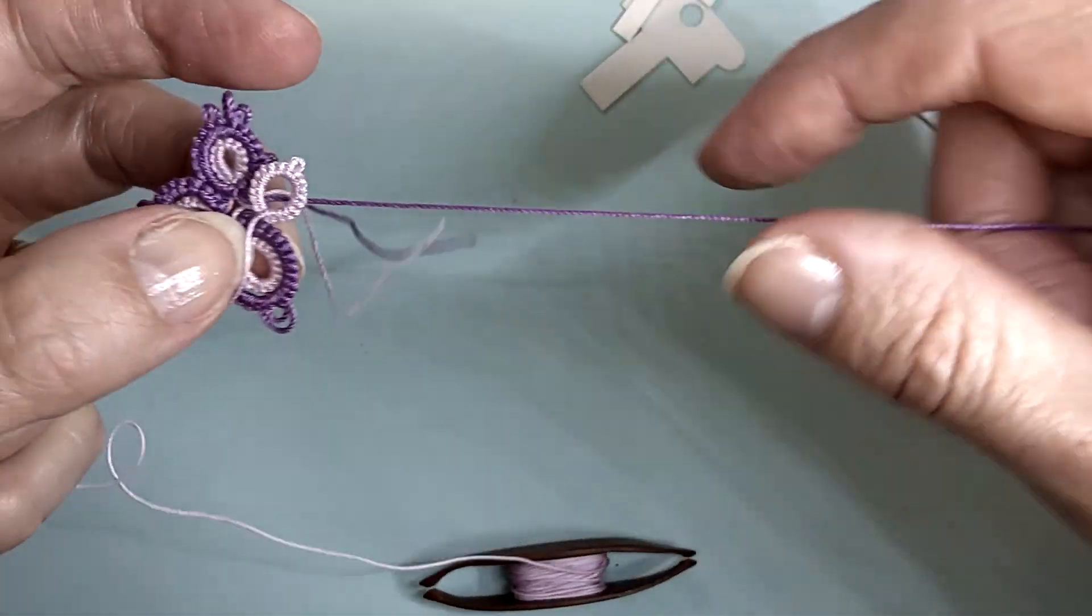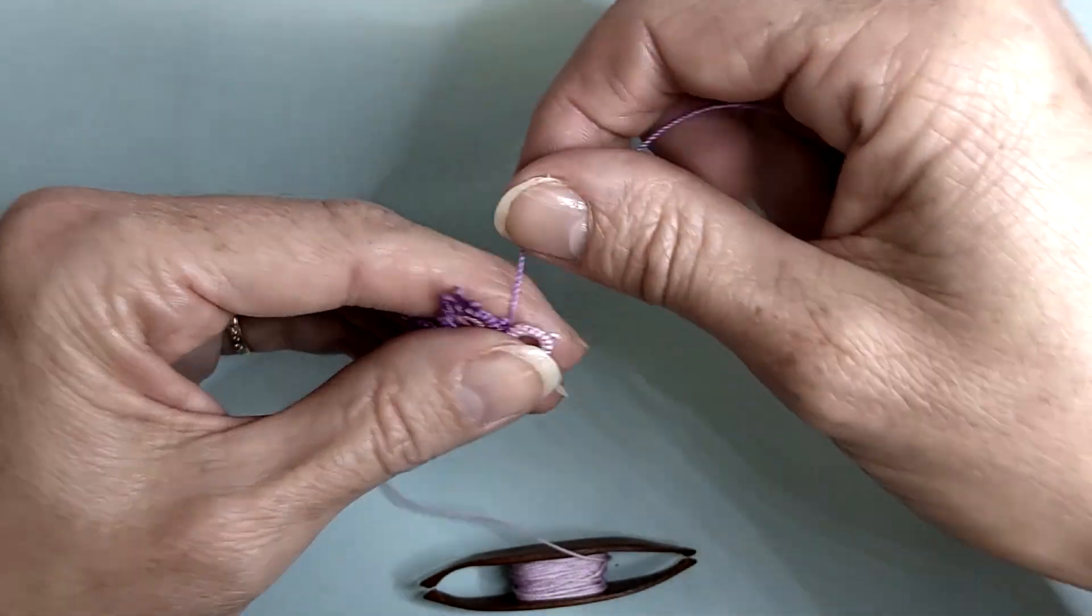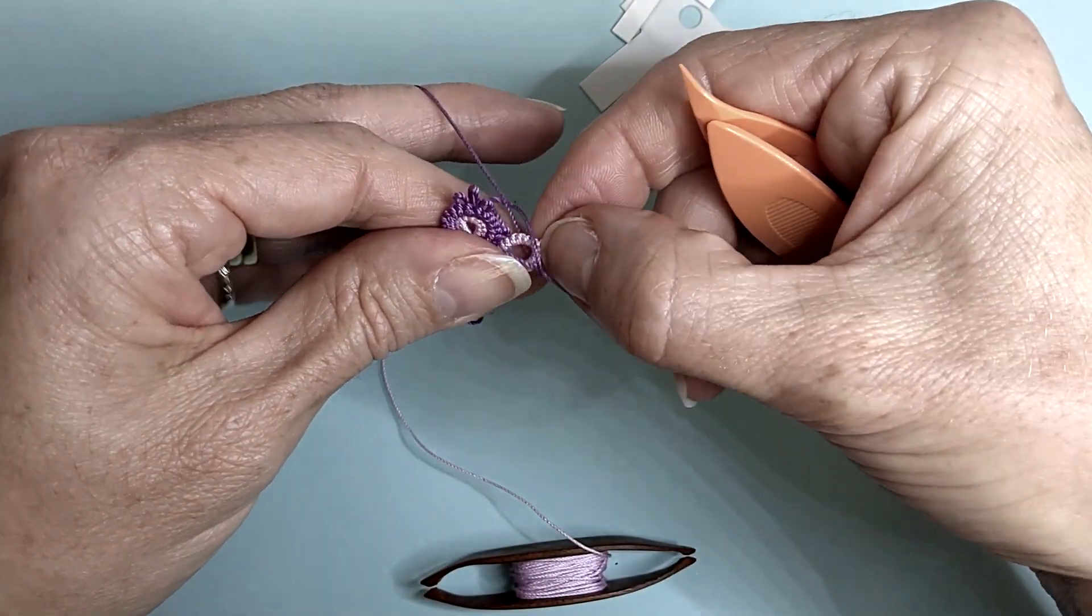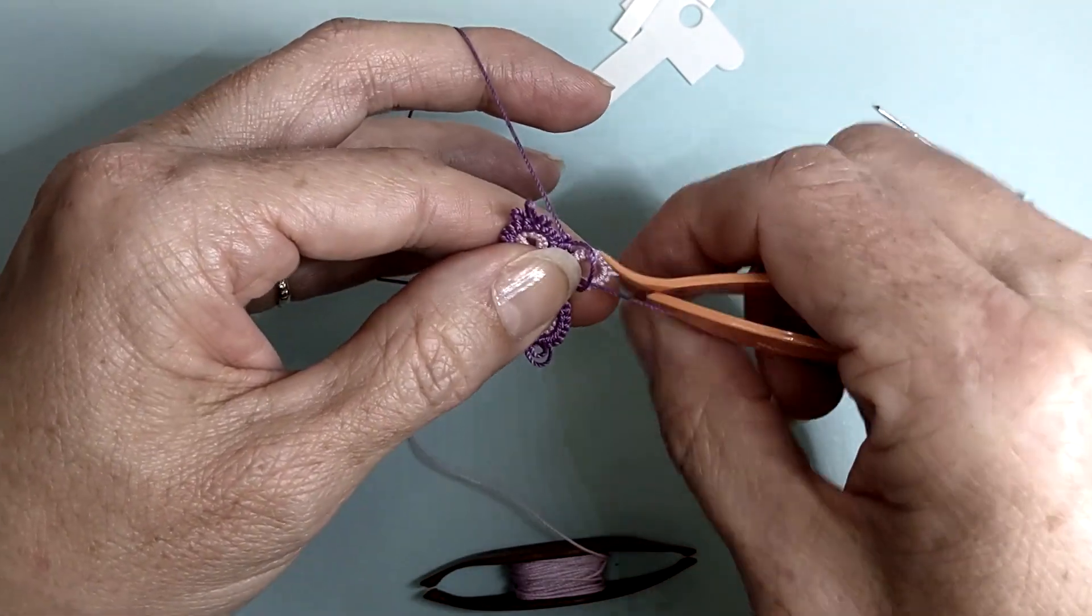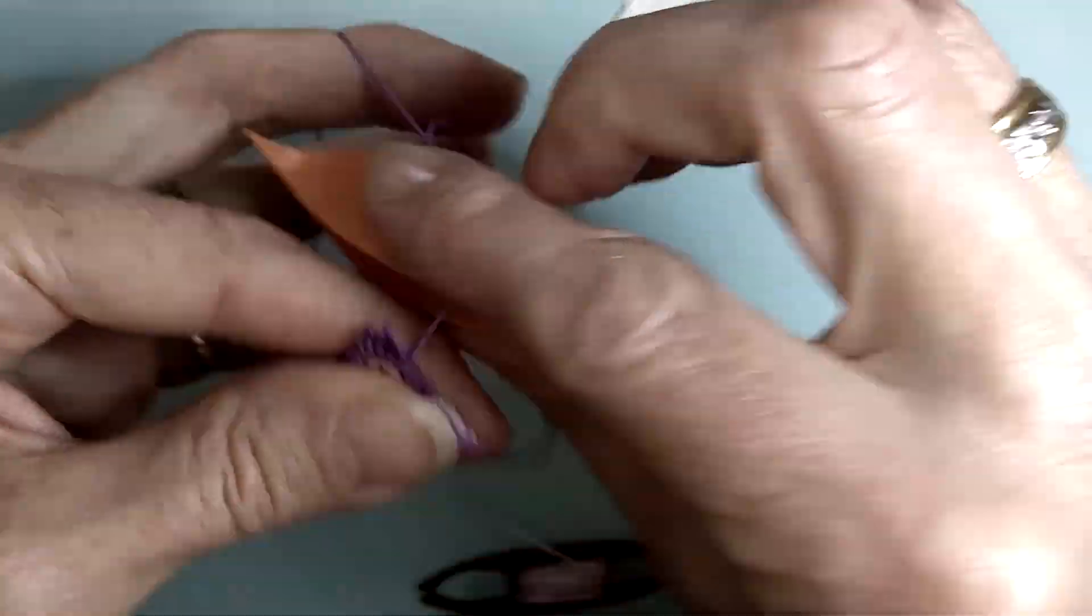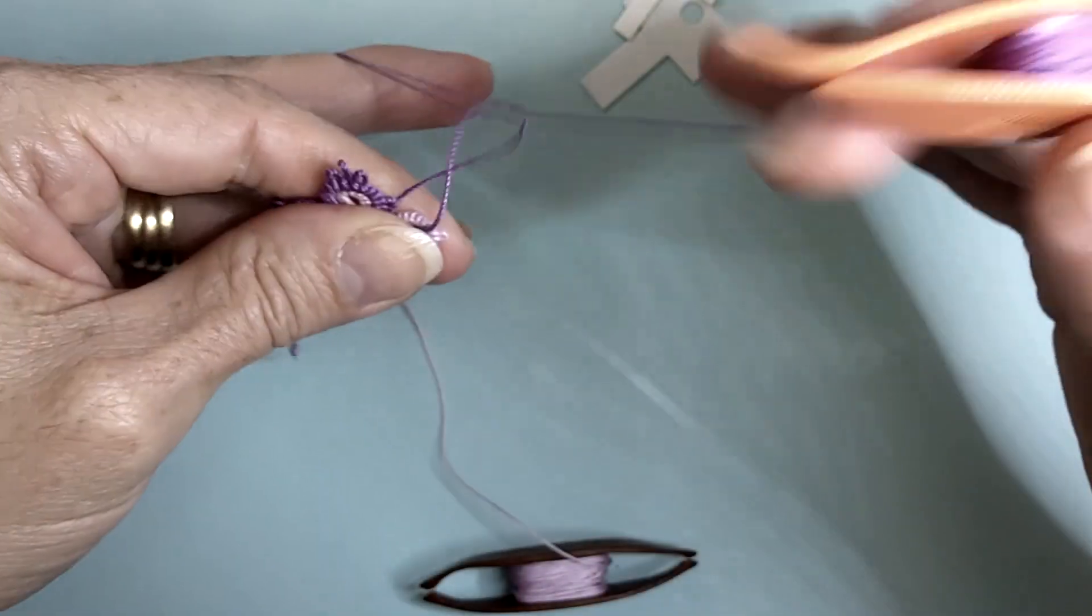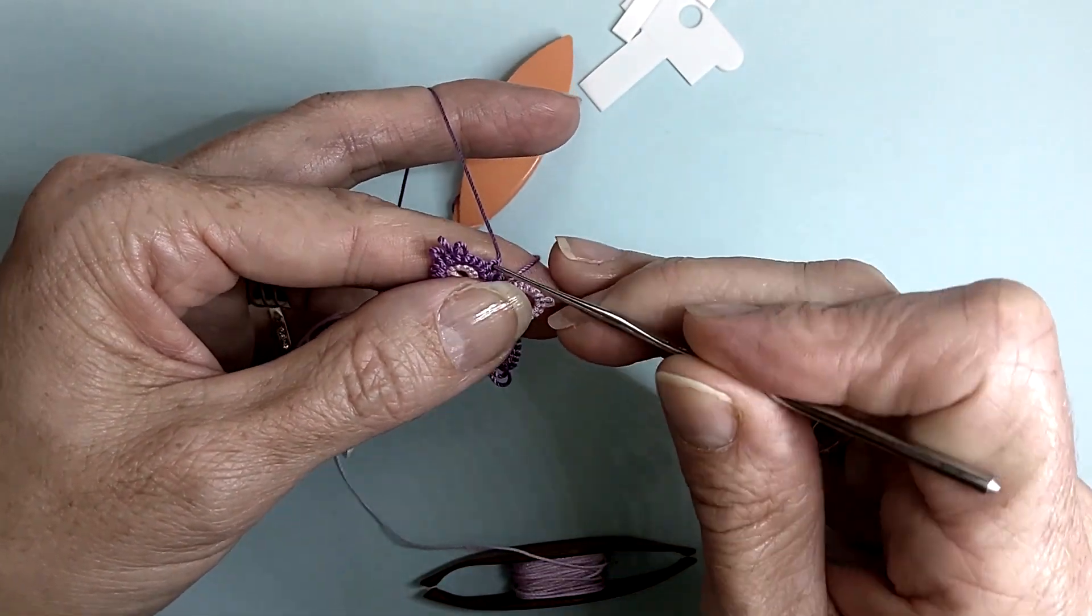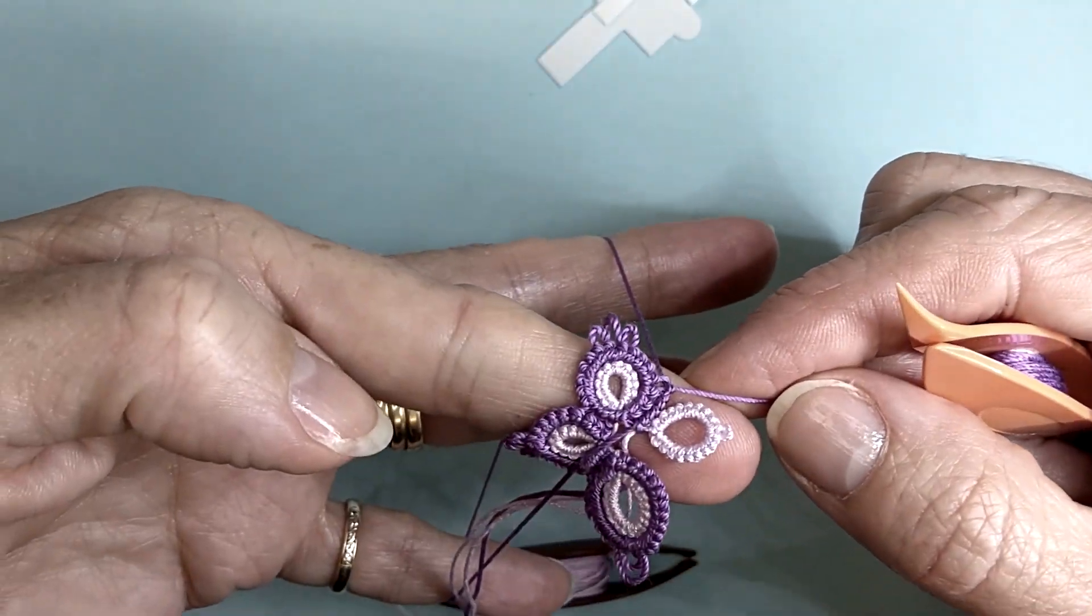To work ring 8, we are swapping shuttles again. We are working 3. Again, pass that ring through the loop. Join back to ring 6. We have 9.